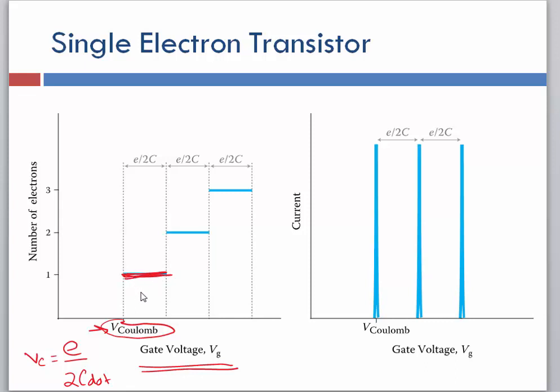Now if we add, if we want to have two electrons in the quantum dot, then we have to add another quanta of energy, another e over 2C quanta of energy in order to get a second electron in here. And if we want to have a third electron in the dot, then we need yet another quanta of energy.